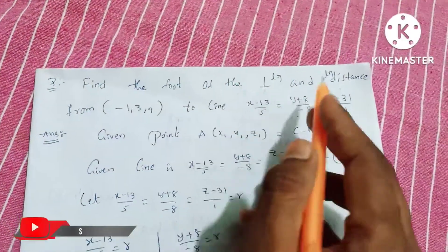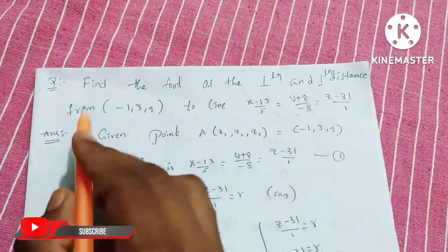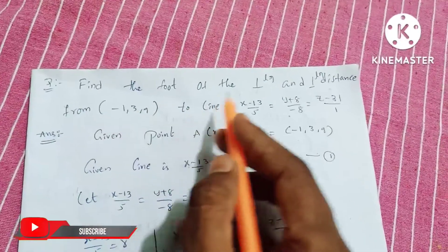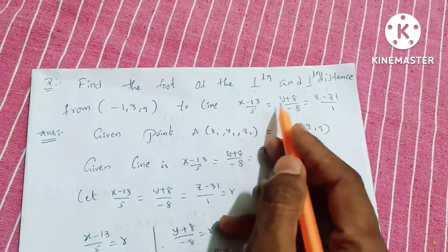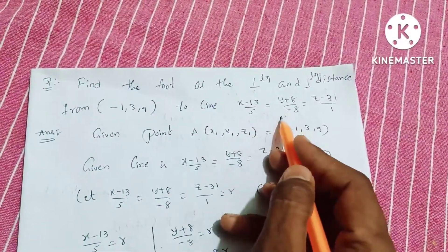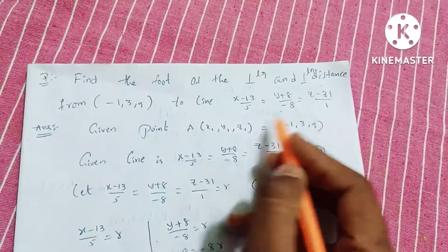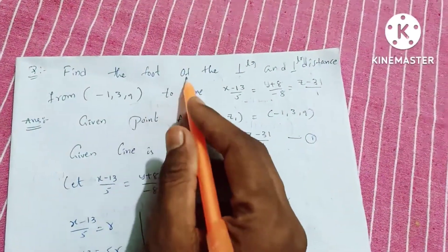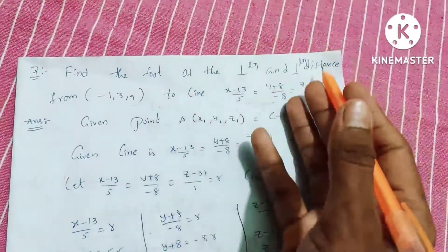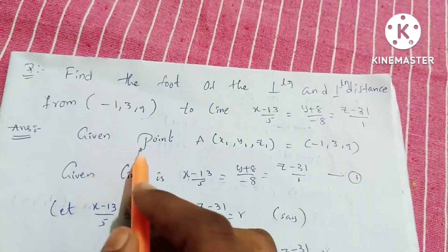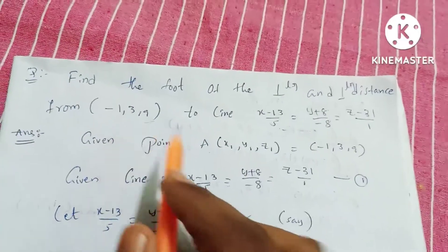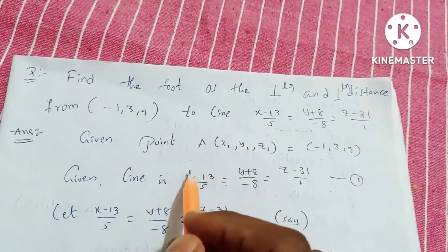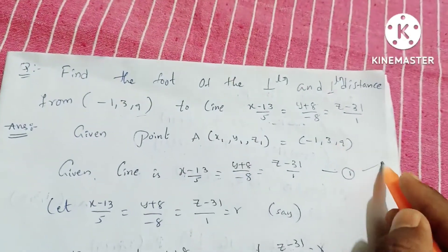Find the foot of the perpendicular and perpendicular distance from a point to the line. The line equation is: (x minus 13) by 5 equals (y plus 8) by minus 8 equals (z minus 31) by 1. We are given a point and need to find the foot of the perpendicular and the perpendicular distance.